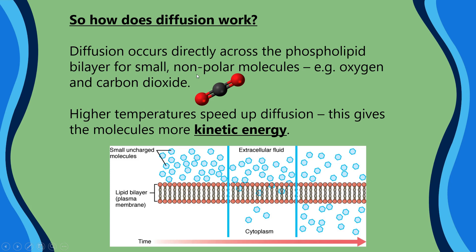How does diffusion work? It occurs directly across the phospholipid bilayer. Let's break this down: 'phospho' because it's got phosphate in there; 'lipid' because it's made of fat; 'bilayer' — think of a bicycle with two wheels — bilayer means two layers. We've got our phosphates, which are the circles at the top, and the lipids, which are the fatty acids coming off from them. Small, uncharged — or nonpolar — molecules can get across the membrane directly. Above is the extracellular fluid, outside of the cell, and below is the intracellular fluid, the fluid inside the cell.